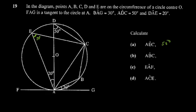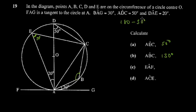Next, find angle ABC. Points A, B, C, E form a cyclic quadrilateral, so opposite angles are supplementary — they add to 180 degrees. We have 50 degrees here, so angle ABC = 180 − 50 = 130 degrees.